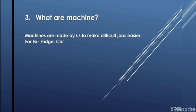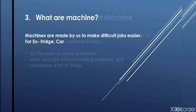Number 3 is, what are machines? Machines are made by us to make difficult jobs easier. For example, fridge and car.